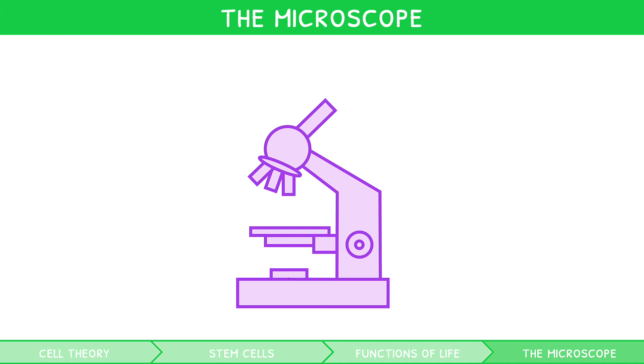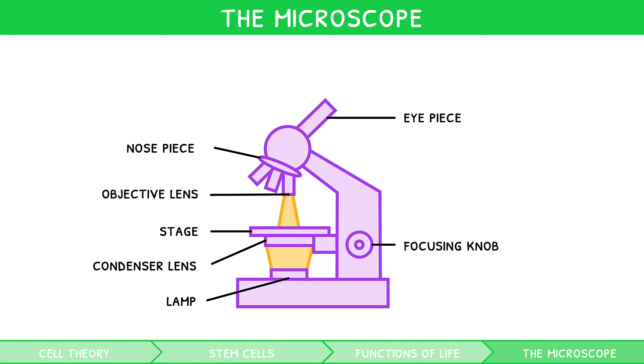A microscope shines a lamp through the condenser lens at the stage on which you will have a sample. This passes light through the objective lens and nosepiece into the eyepiece. Through use of the focusing knob, one can move the diaphragm up and down and left and right to position the sample as needed.